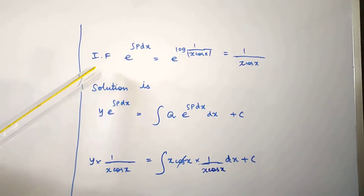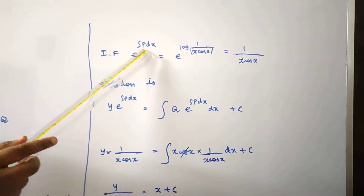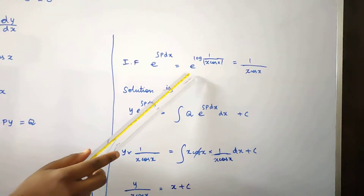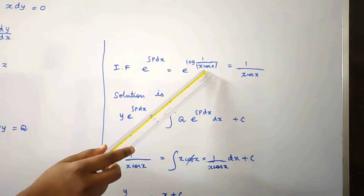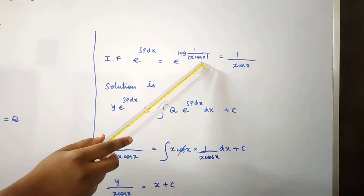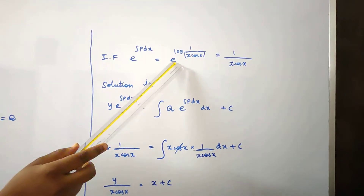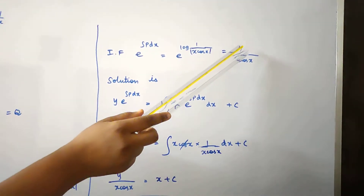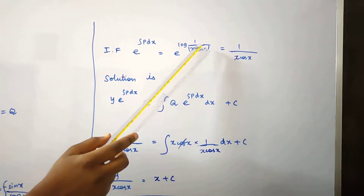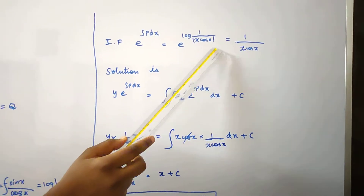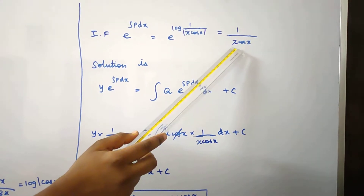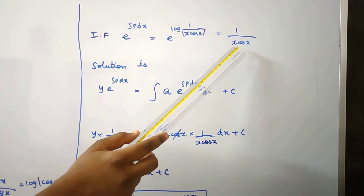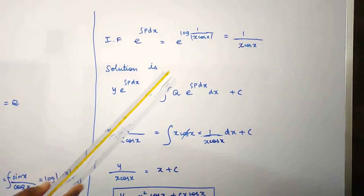The integrating factor is e to the power of integral P dx, which equals e to the power of log(1/(x·cos(x))). Since e and log cancel, the integrating factor equals 1/(x·cos(x)), taking the modulus as positive.